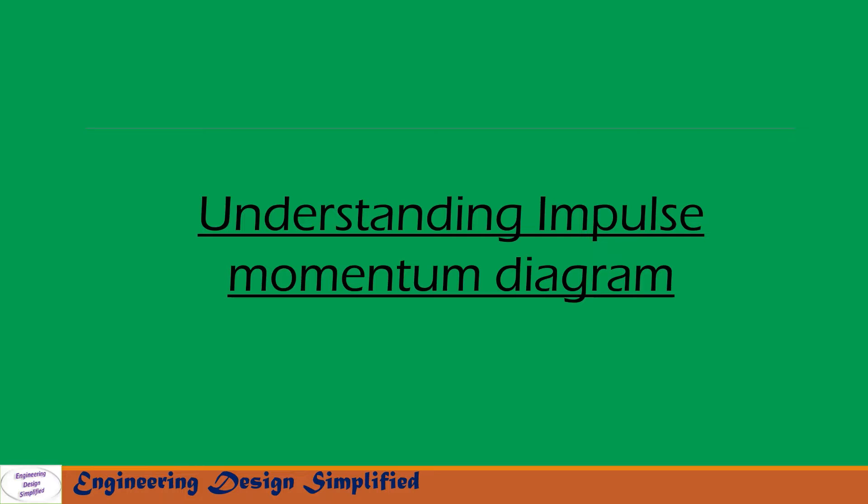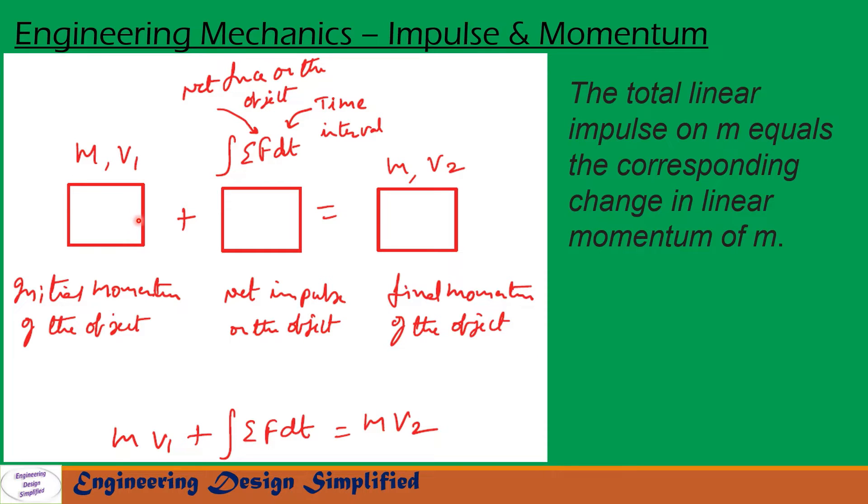In this video, let us try to understand impulse momentum diagrams. Let us assume a body of mass m, initially moving with a velocity v₁. So its initial momentum can be written as m·v₁.